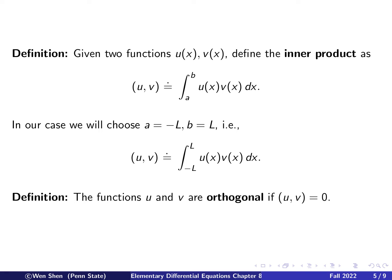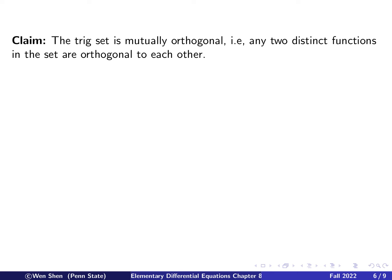With this definition comes the next definition: orthogonality of functions with respect to this inner product. Once we have the inner product, we call two functions u and v orthogonal to each other if their inner product equals zero. Recall a similar definition for vectors — if two vectors have inner product zero, they are orthogonal or perpendicular to each other in 2D. Here comes the big claim: the trig set — defined with sine, cosine, and constant 1 — is mutually orthogonal. That means if you pick any two distinct functions in the set, they are orthogonal to each other.